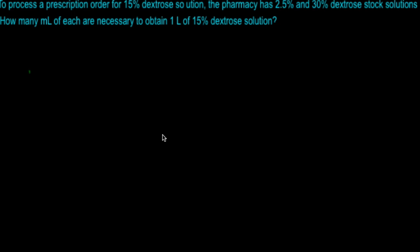This is going to be an alligation problem. To process the prescription order for a 15% dextrose solution, the pharmacy has 2.5% and 30% dextrose stock solutions. How many milliliters of each are necessary to obtain one liter of a 15% dextrose solution? This is a perfect example of an alligation, where the doctor prescribes a strength you don't have, but you have two other strengths available.